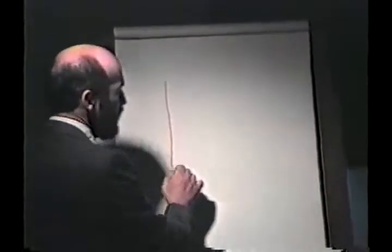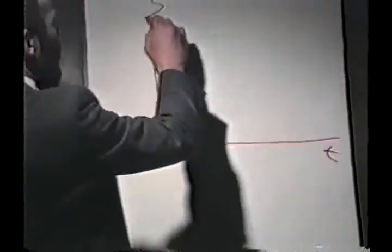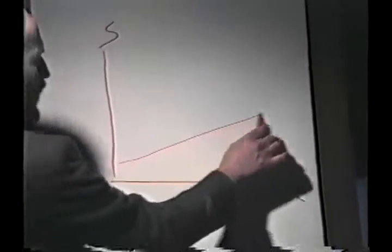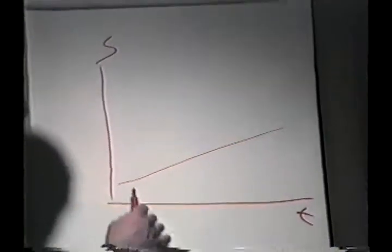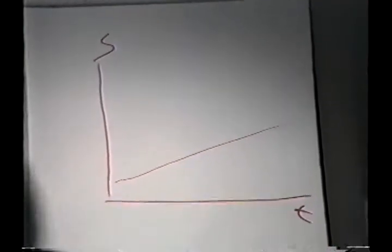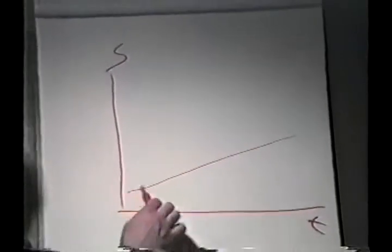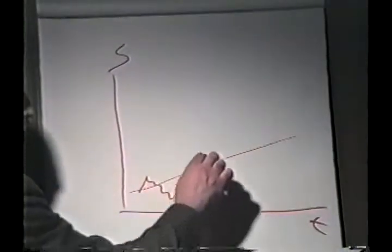What we assume, if this is a time axis and this is a stock, we assume that there is some kind of trend, hopefully going up, otherwise no one will buy the stock, of appreciation in the price of the stock. But on top of that, on top of the trend, there is a Brownian motion.